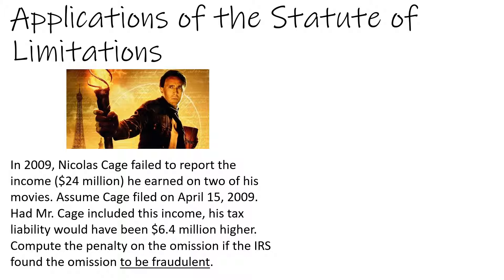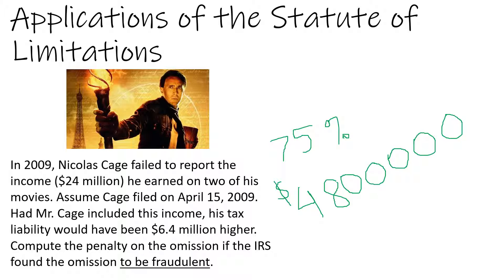However, if the IRS found the omission to be fraudulent — in that he had deliberately undersold the government, which is probably likely given the fact that he had an accountant telling him what to do — the penalty is 75%. The penalty had the IRS found him to be fraudulent and not criminally fraudulent would be $4.8 million.